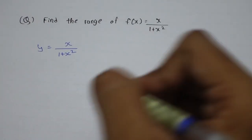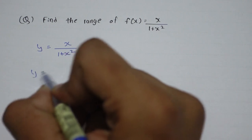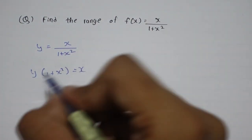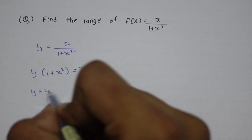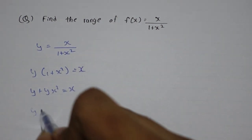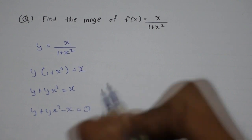Now you can take the 1+x² to the other side and multiply it with y. So y(1+x²) = x. You can take this as y + yx² = x. Now y + yx² - x = 0.